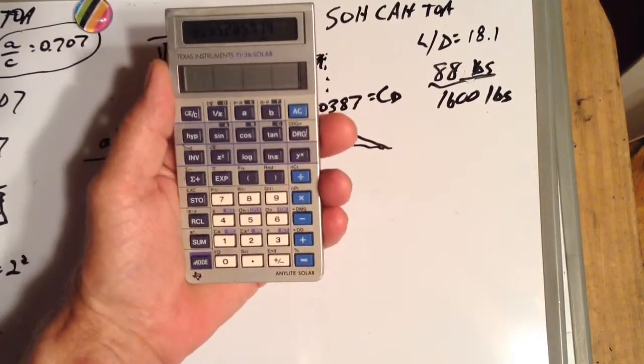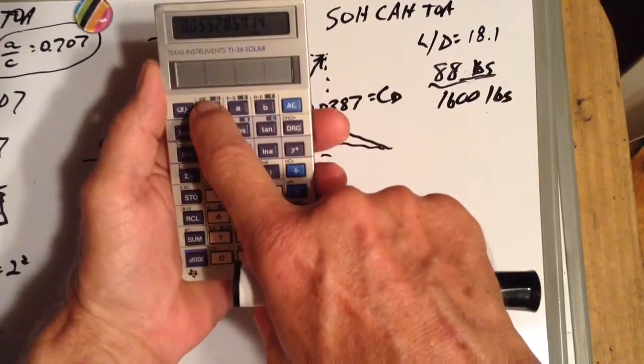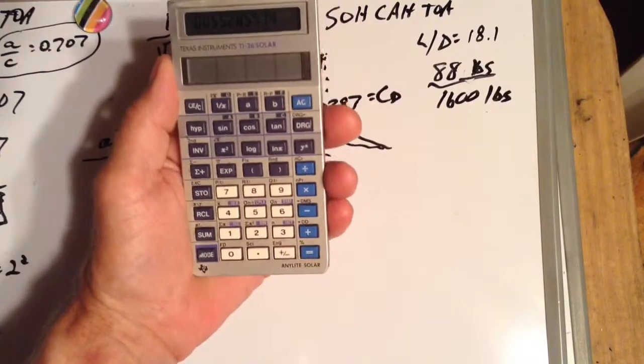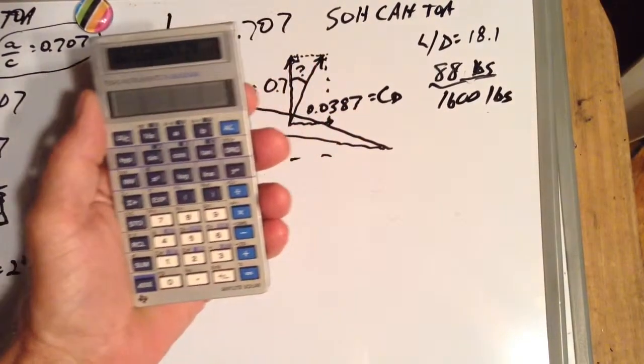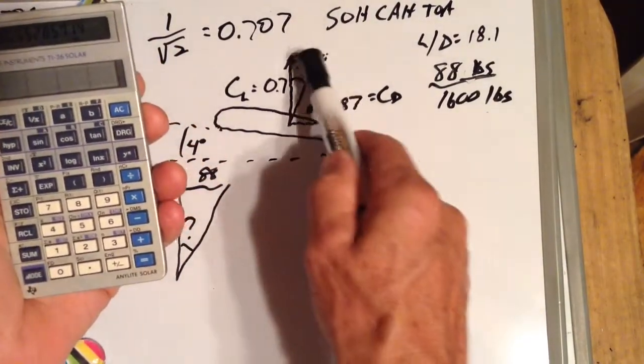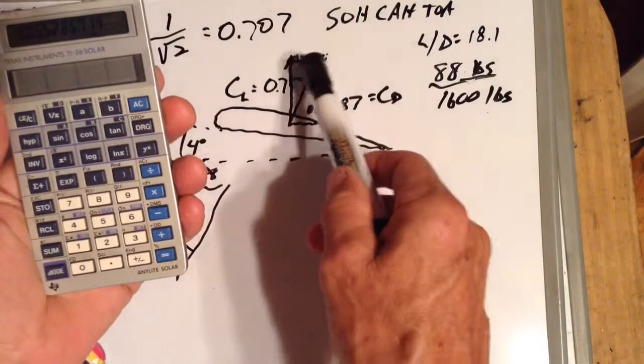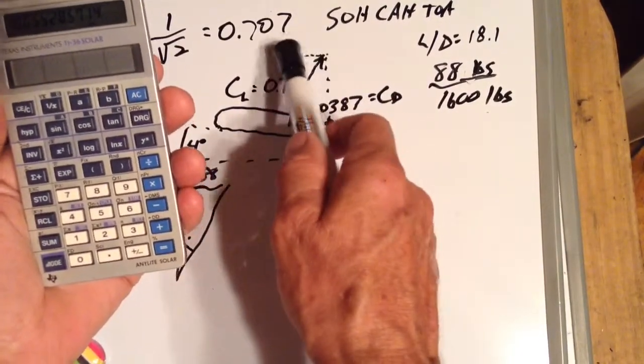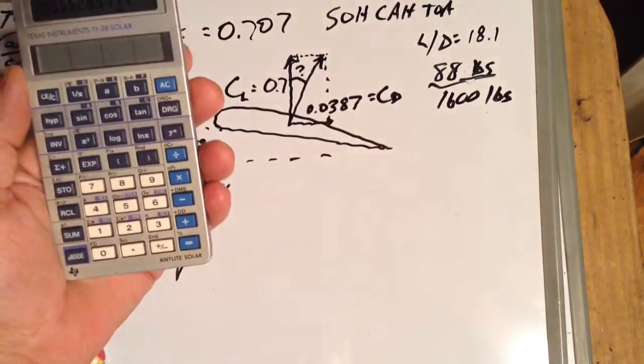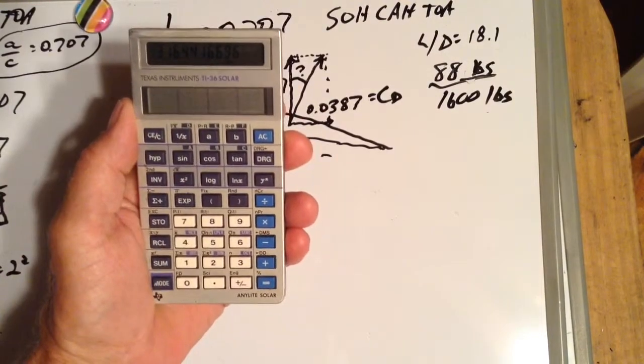0.0387 divided by 0.7 equals 0.0552857. That should be the reciprocal of our lift to drag ratio, 18 to 1. Hit 1 over x. Yep, sure enough, 18.1. Hit 1 over x again, get back to my 0.055 and all that. So now I want to know what this angle is. If I knew the angle, I could find out the ratio of the sides. But if I knew the sides and want to find the angle, I know what the sides are and I want to know what the angle is. So I hit invert tan and I get 3.16 degrees.